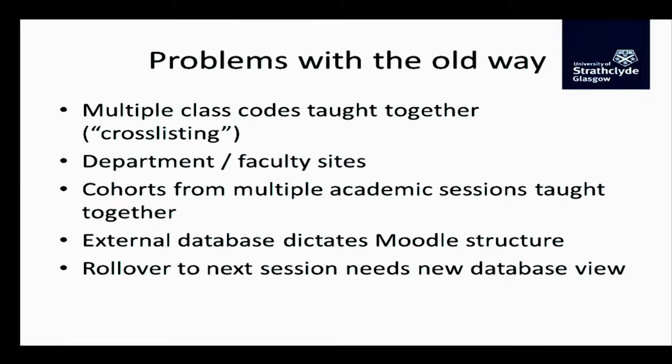One of the main issues is multiple class codes taught together. For example, you've got CS101 — computer science for geologists — and CS102 — computer science for neurobiologists — but essentially they're the same students sitting in the same room, the same lecture hall, doing the same tutorials. The way the database plugin worked, those people would be stuck into different Moodle courses whether you like it or not, so there's no collaboration between the two class codes. This is what was called cross-listing in WebCT, and it was a real problem.